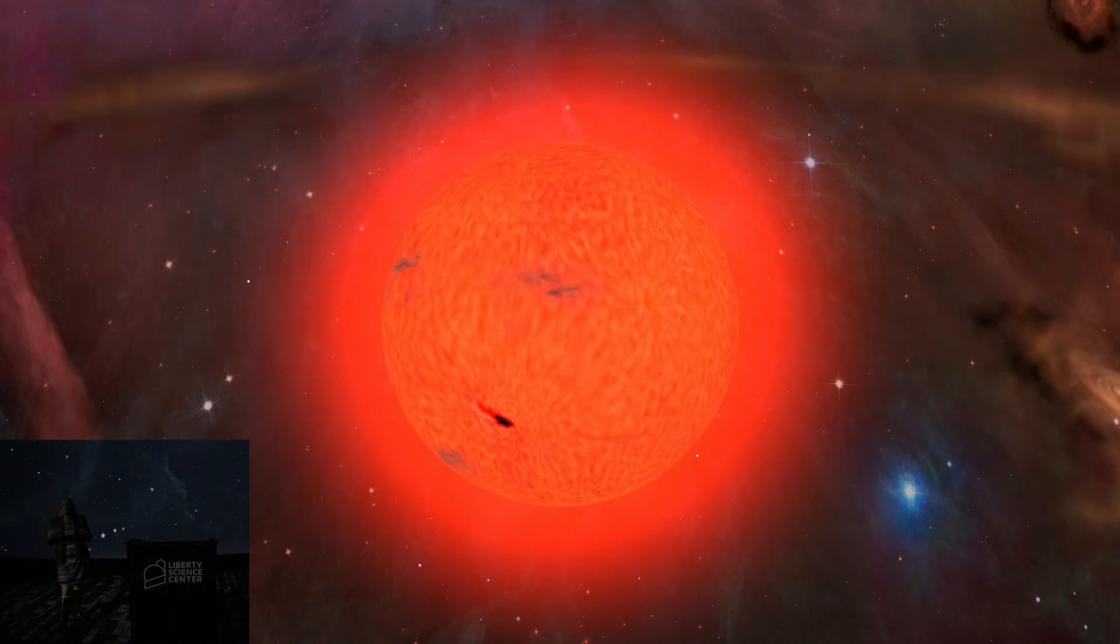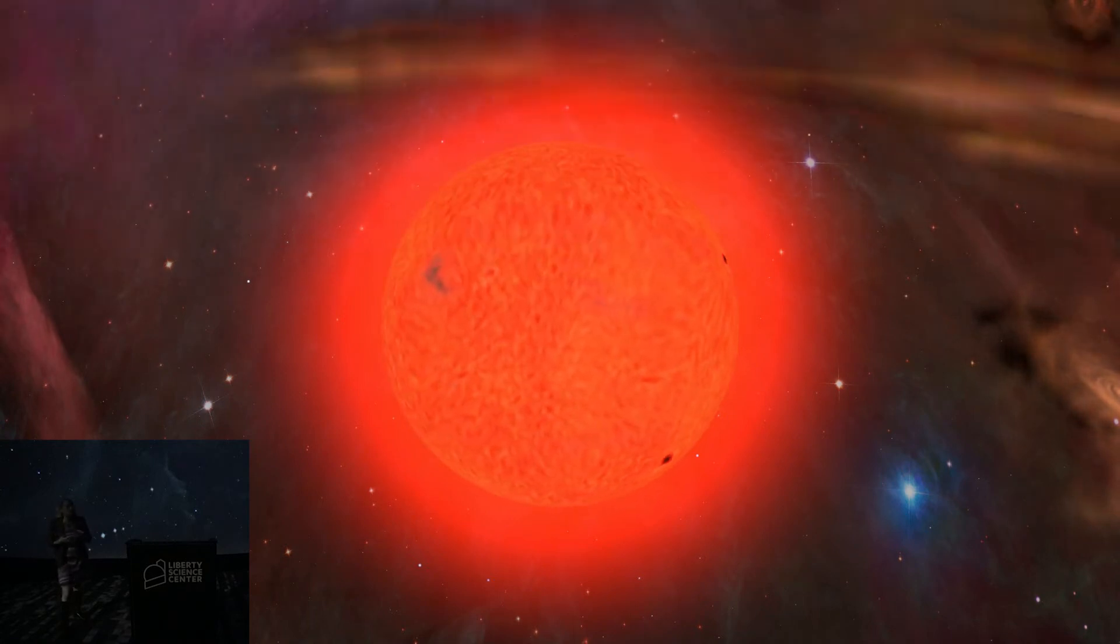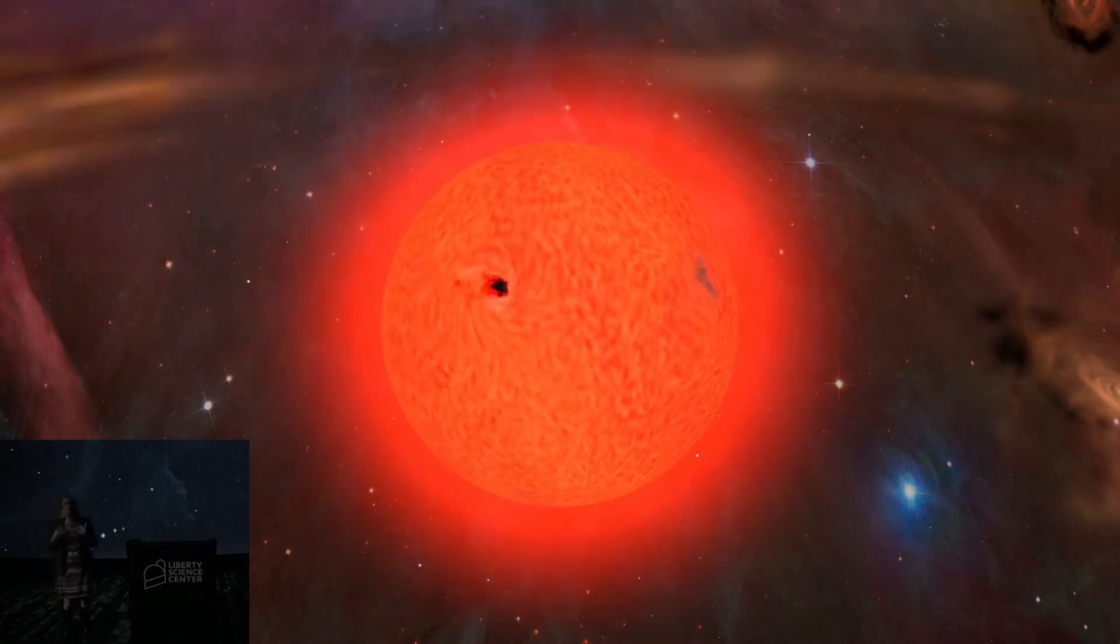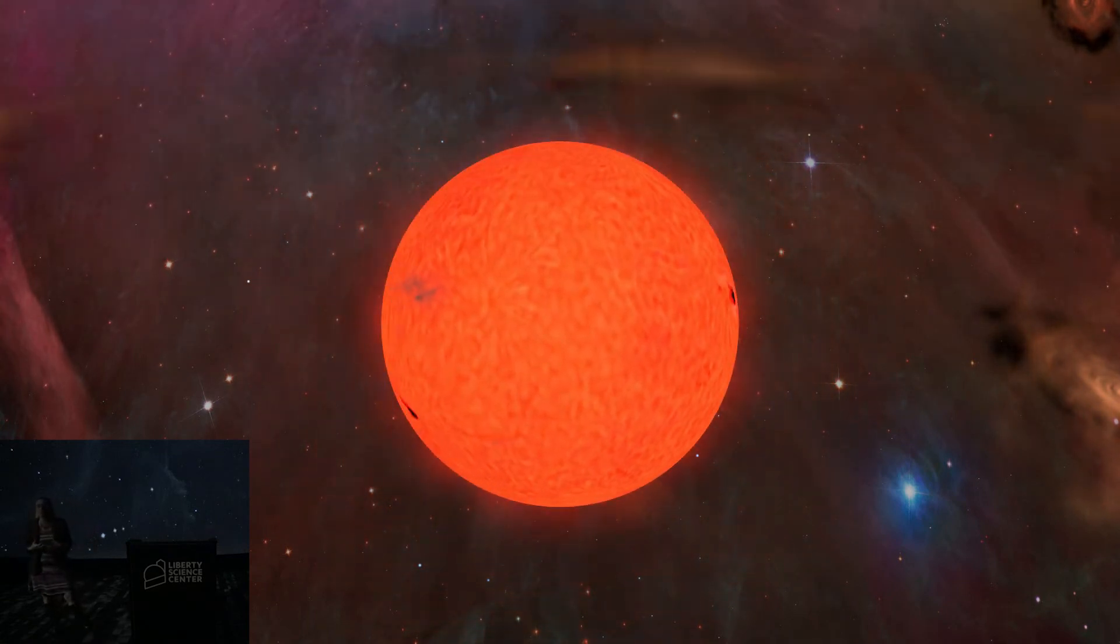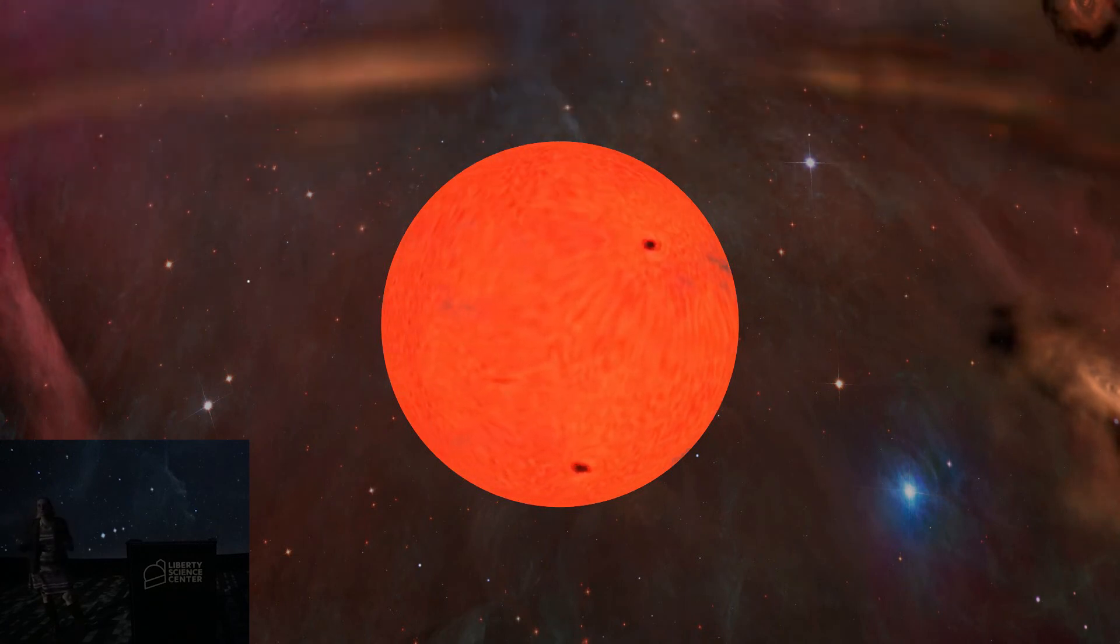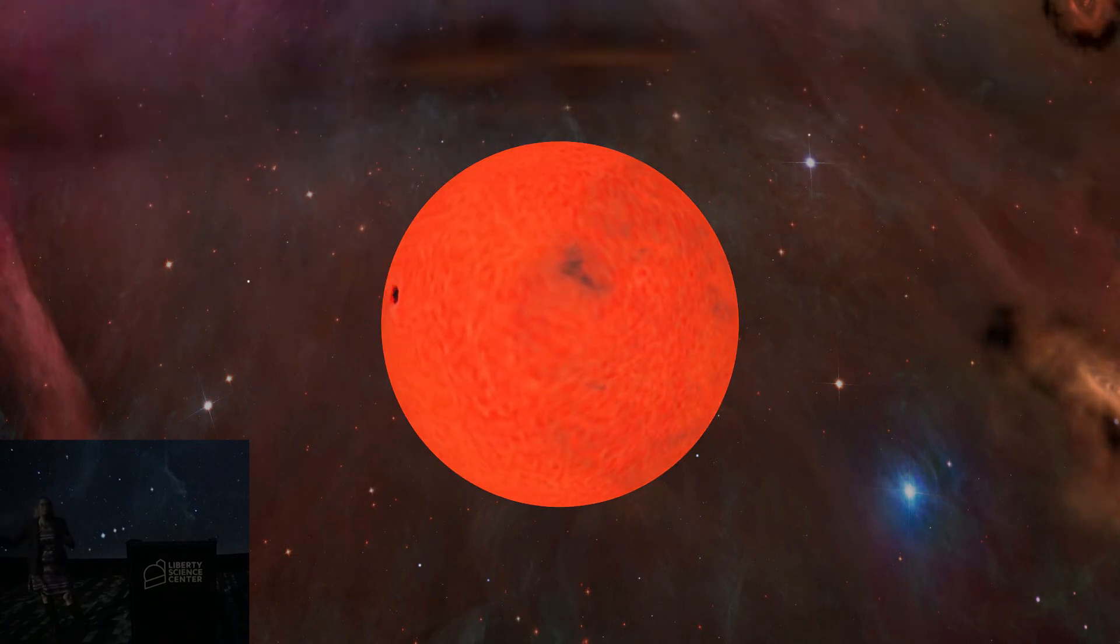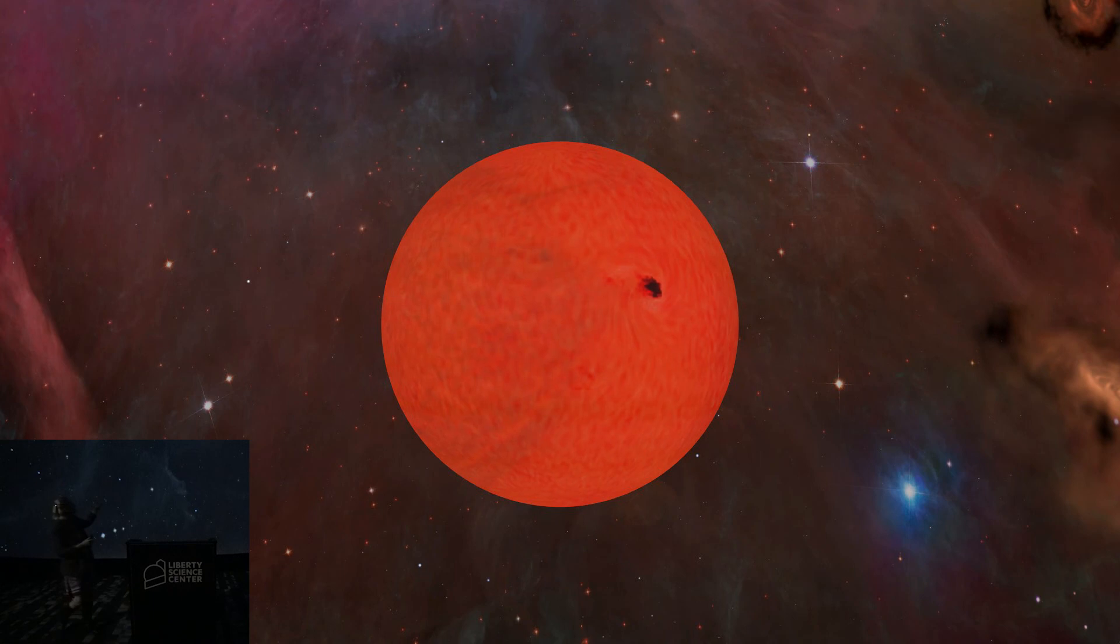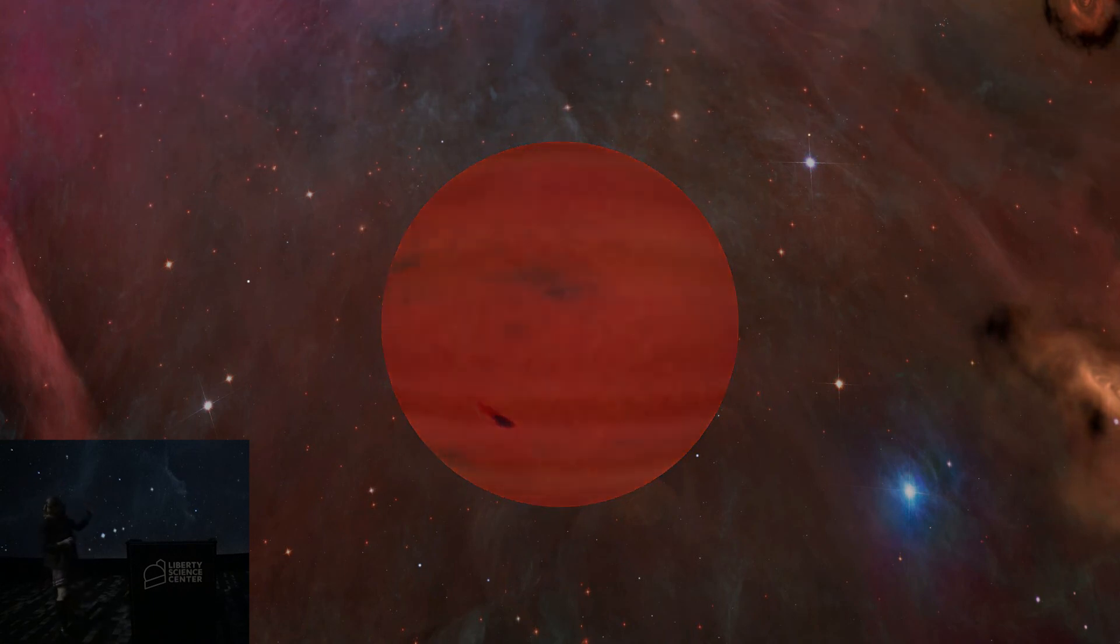So brown dwarfs can form and fuse some things that are a little bit easier to fuse than hydrogen, lithium, deuterium, but they won't ever stably fuse hydrogen in their cores, so they won't ever create their own energy like a star does. They just kind of cool and fade with time, and so you can see they become kind of dark and stripy.